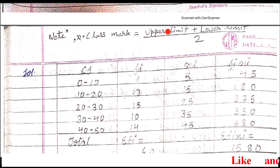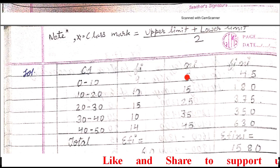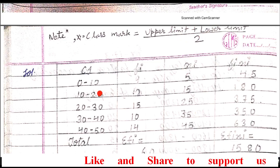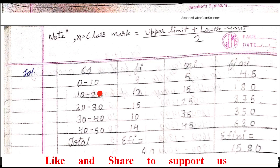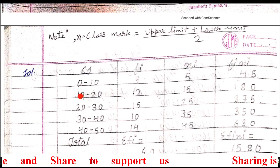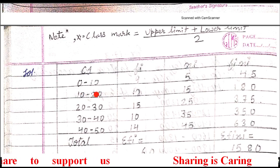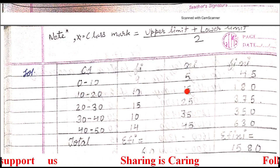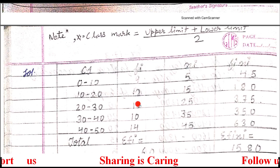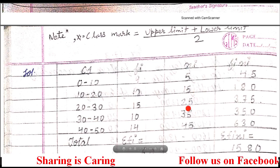When we substitute the values: 10 plus 0 upon 2 gives us 5. In the same way, the upper limit of the next class is 20 and lower limit is 10. So 10 plus 20 is 30, and 30 upon 2 gives us 15. In the same way, each class interval's class mark we have to find out.